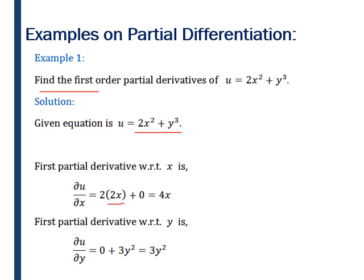Now we find the first partial derivative with respect to y. When we partially differentiate the given function with respect to y, we will keep x constant. As x square is constant, its differentiation will be 0. So del u by del y is equal to 3y square. These are the first partial derivatives of the given function u.